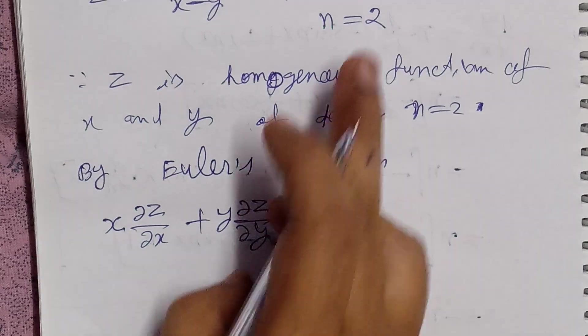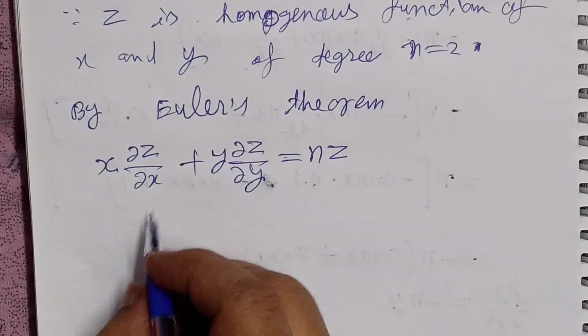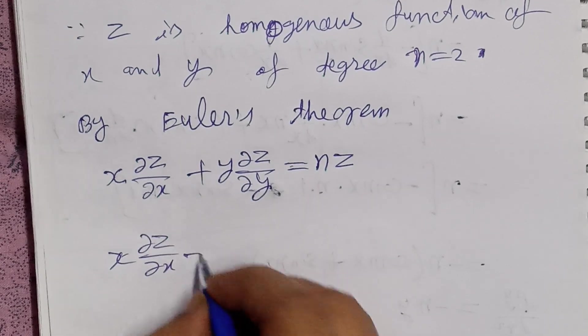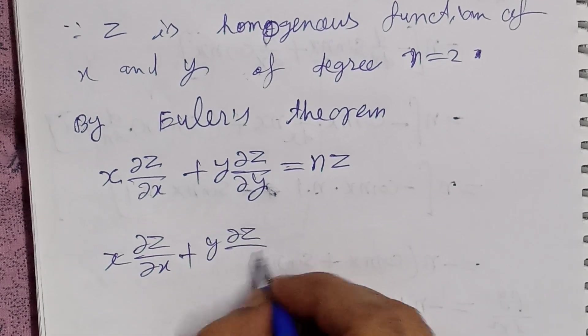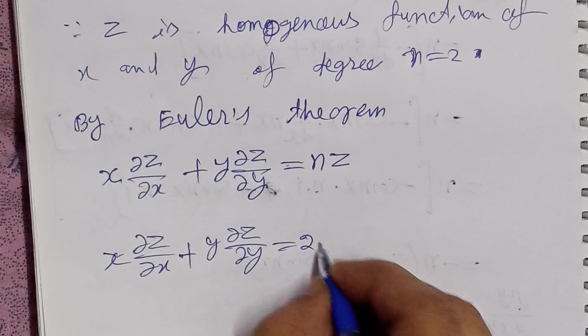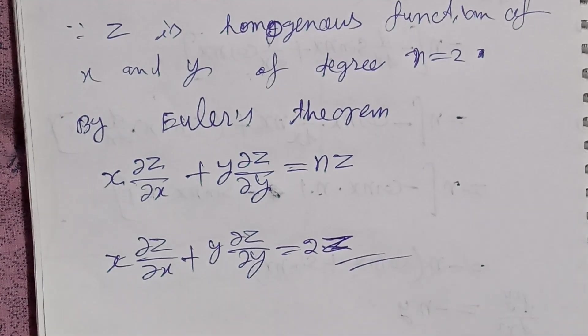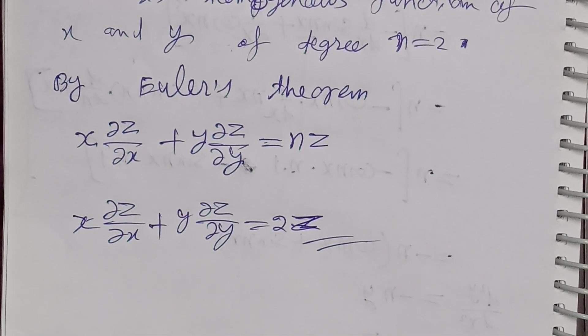When we put the value n equals 2, we prove that x del z over del x plus y del z over del y is equal to 2z. We have proven this. Thank you very much indeed for listening. Alhamdulillahi rabbil alameen.